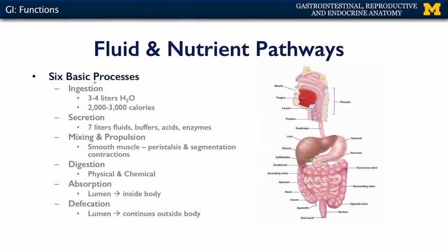In terms of the fluid and nutrient pathways, there are six basic processes that are going to modulate these materials. The first being ingestion. A typical human is going to take in about three to four liters of water and somewhere between two to three thousand calories per day. This is going to vary with respect to activity level, general metabolism, and diet goals, but on average, three to four liters of water and two to three thousand calories daily.